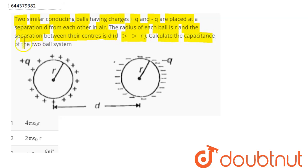Calculate the capacitance of the two ball system. Now as we know, capacitance is equal to q divided by potential difference, that is ΔV. Now here we can see both have same charges.